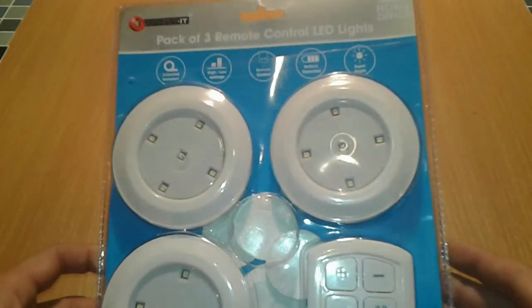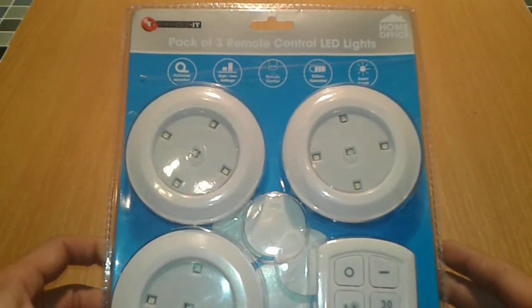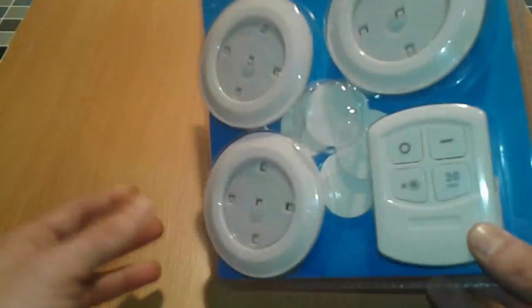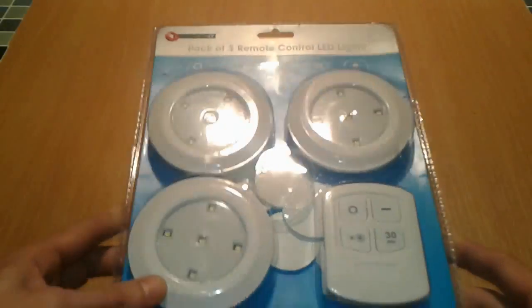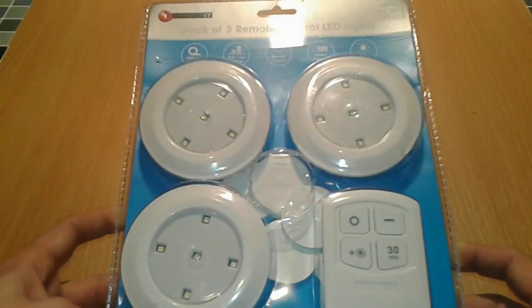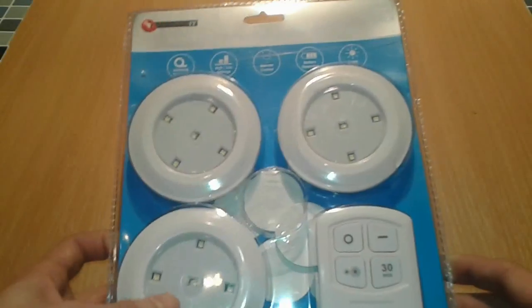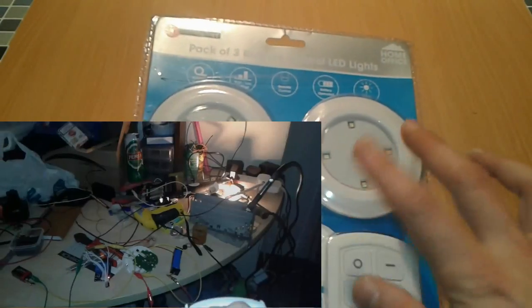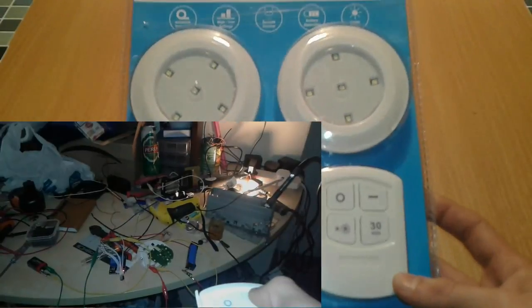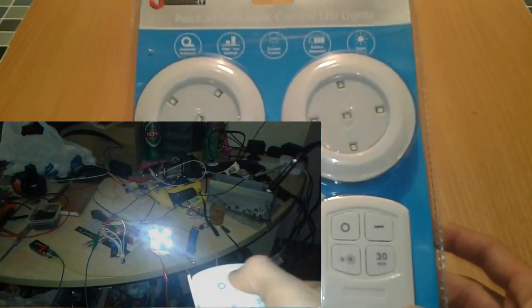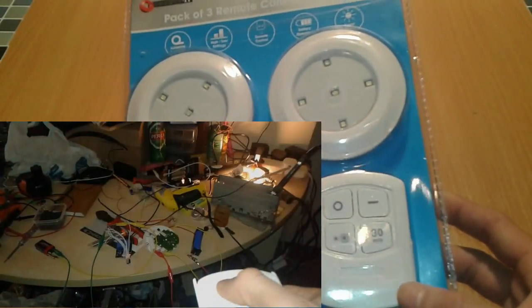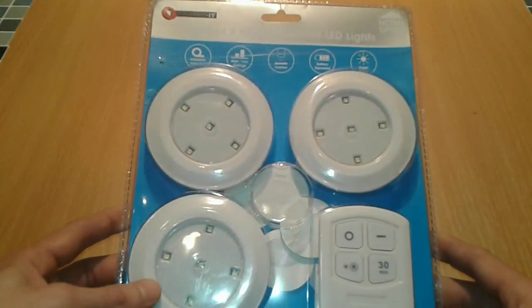Alright friends, so today the guinea pig is this remote control LED lights from Poundworld Electronics, a brand all over the UK. Could be in USA, could be the Dollar Tree or Dollar Store, something similar. Everything is a pound, but some time to time we have these special lines which is more than a pound. This one was like 5 pounds. We will see if this one is any good and if we can use it for some other project of ours.